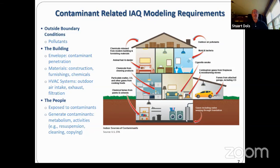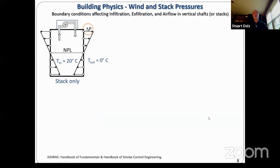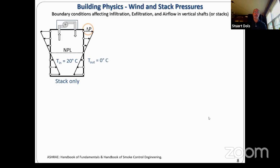To understand the effect of these boundary conditions on infiltration and airflow in vertical shafts, we need to talk about building physics. This simplified elevation model shows a building with no internal resistance to airflow and uniformly distributed leakage. With cold outdoor air more dense than warm inside air, differences in density lead to pressure differences across the building envelope. Pressures at the bottom of the building are lower than outside at the same elevation, so air flows in at the bottom. The opposite happens at the top. Somewhere in the middle is the neutral pressure level, where there is no airflow in or out.